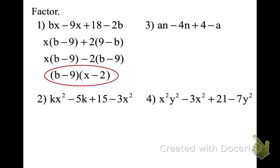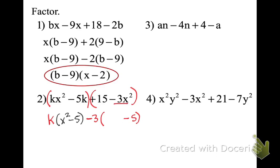Let's check our work. If I pull out a k, I'm left with x squared minus 5. Now pull out a negative 3 from the second group: 15 divided by negative 3 is negative 5, and negative 3x squared divided by negative 3 is positive x squared. Now we have our binomial factor of x squared minus 5, and everything else that's left is k minus 3.